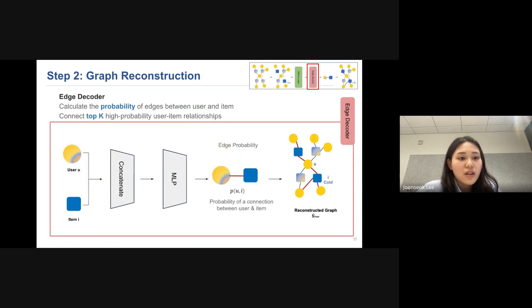Then we perform edge decoder to calculate the probability of edges between user and item. Using user embedding and item embedding from the previous part, we concatenate and perform MLP to get the edge probability. And we connect the top-k high probability user-item relationships to generate the constructed graph G-rec.